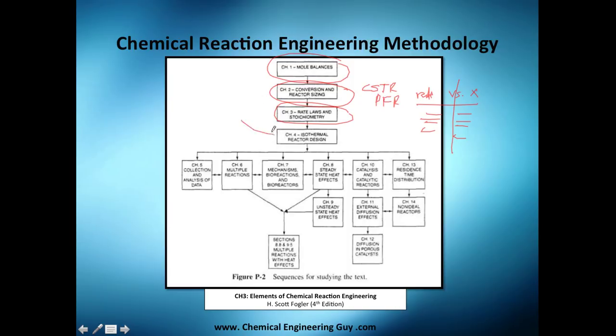And finally, we are here, chapter number four, which is isothermal reactor design. So as you see, after you finish this chapter, you will have the essentials on reactor engineering. Now what does that mean? It means that after that, we're going to follow chapter five, which is collection and analysis of data, which is essentially getting this information and applying it to a rate law. We're going to focus more on the rate law rather than the reactor per se.